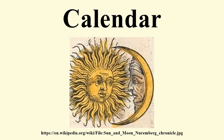Solar calendars assign a date to each solar day. A day may consist of the period between sunrise and sunset with the following period of night, or it may be a period between successive events such as two sunsets. The length of the interval between two such successive events may be allowed to vary slightly during the year, or it may be averaged into a mean solar day. Other types of calendar may also use a solar day.